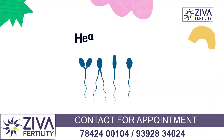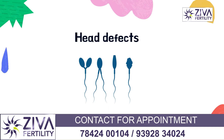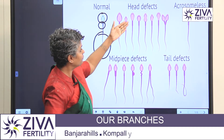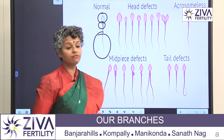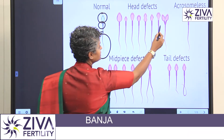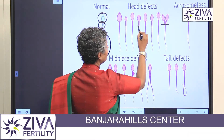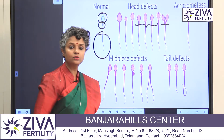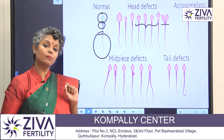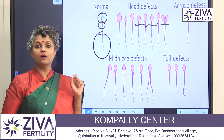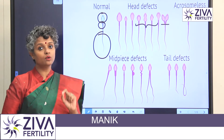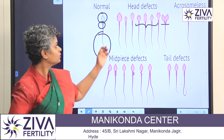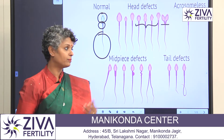Let's look quickly at some head defects. There could be a large head, there could be a small head, there could be improper packaging of DNA, there could be two heads as you can see here, and a lot of shapes which are abnormal. It's very critical that we compare the standard normal morphology to the defects that are present in the sample.